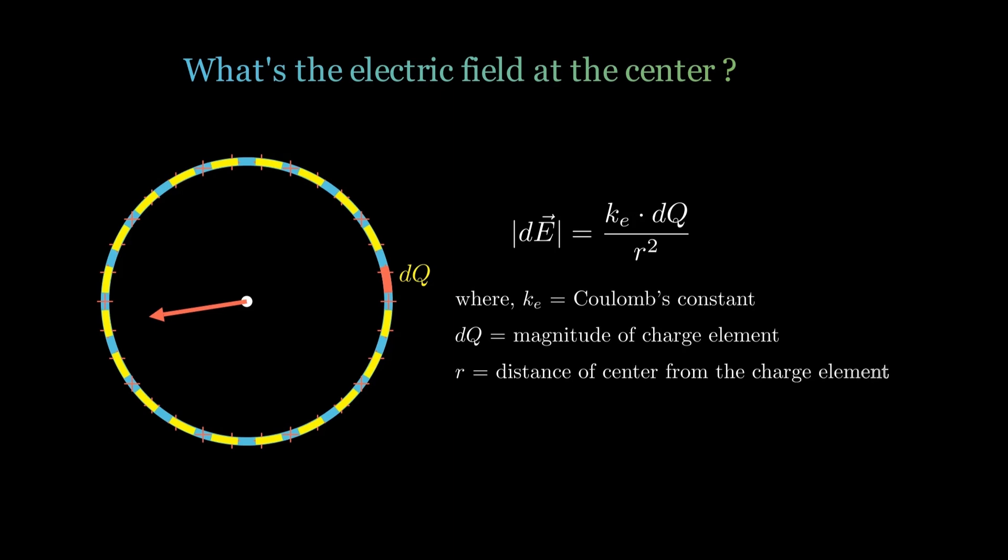The magnitude of the electric field depends upon the amount of charge dq and the distance r from the charge. Since we are considering a uniformly charged ring, each element dq has the same charge because the charge is evenly distributed along the entire ring. Additionally, because all these elements are equidistant from the center, being part of a circle, the electric fields they produce are of equal magnitude.